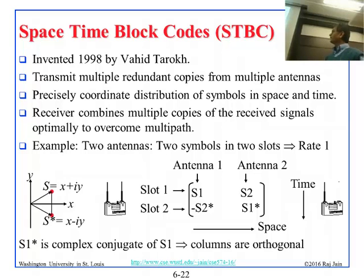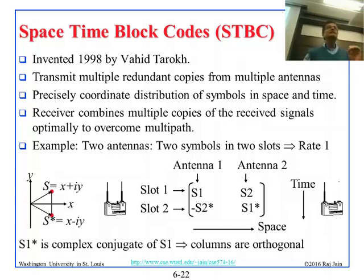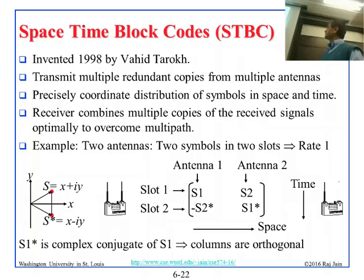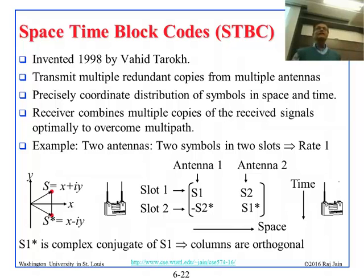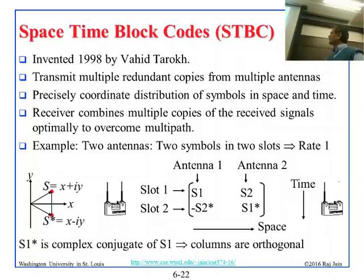If S2 is X plus iY, what will you send? You send minus X plus iY. So here you send X plus iY, and here you send minus X plus iY. Now you have two equations — you can clearly calculate X and Y, and get the signal much better than if you have two copies of X plus iY. Similarly, in the second slot on antenna 1 you send S1-star.